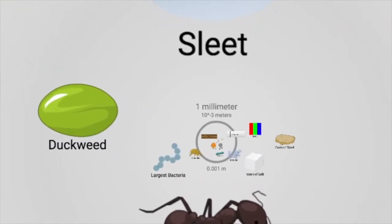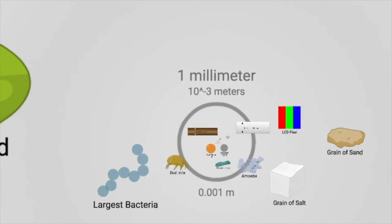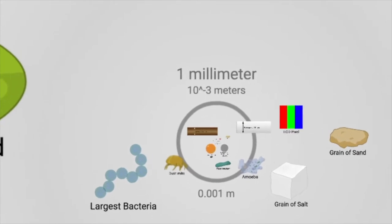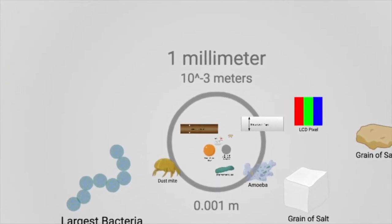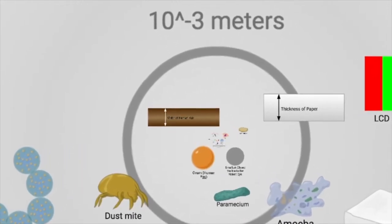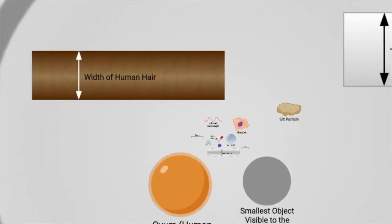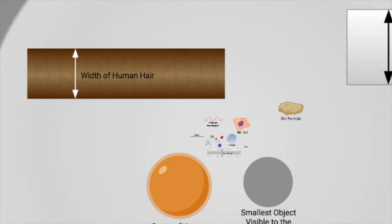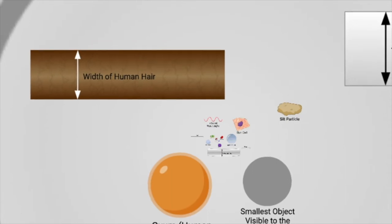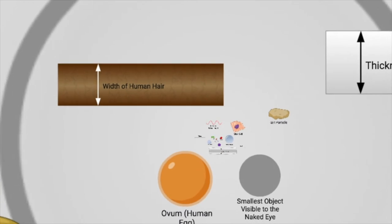Zooming in even farther, we are approaching things that are almost beyond our ability to see. To the right, you'll notice a grain of salt, a grain of sand. To the left, the strand of the largest recorded bacteria. As we zoom in even farther beyond a millimeter of circumference, we approach organisms we can't see without a microscope, and also the width of a human hair. At the bottom right, you'll notice a gray circle denoted the smallest object visible to the naked eye.